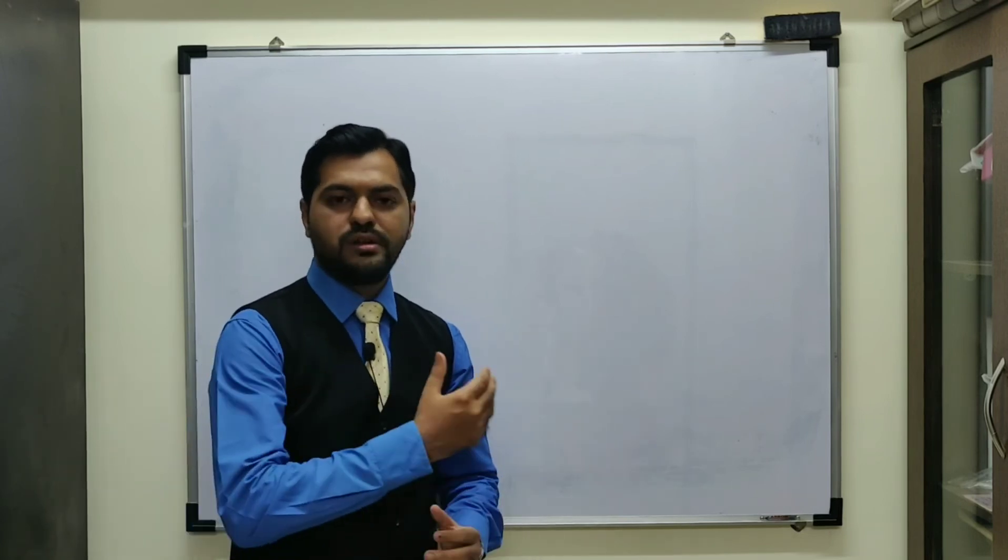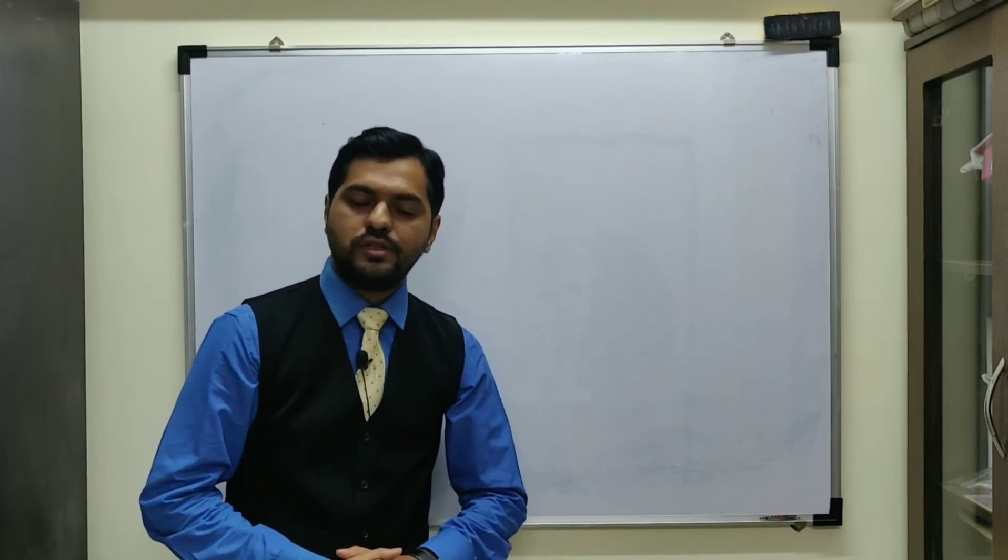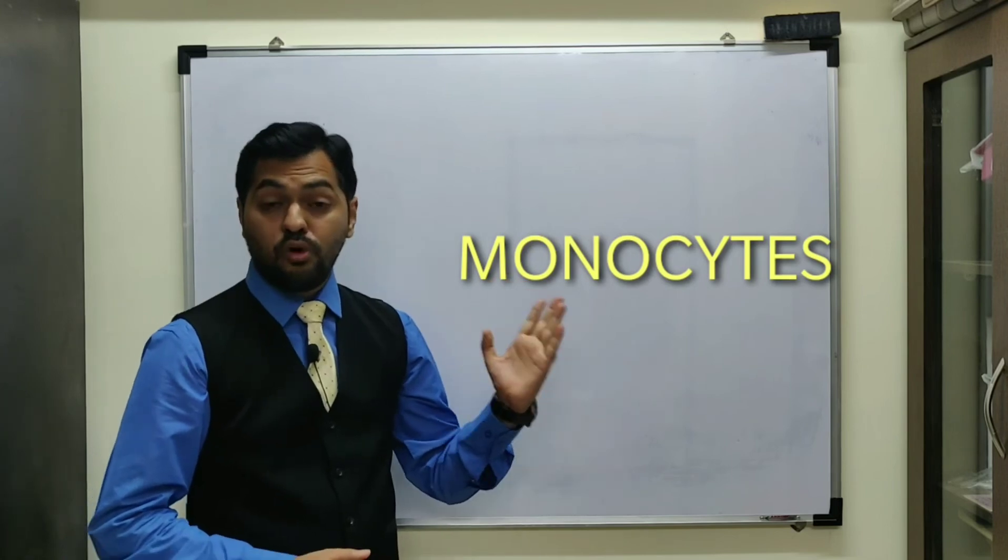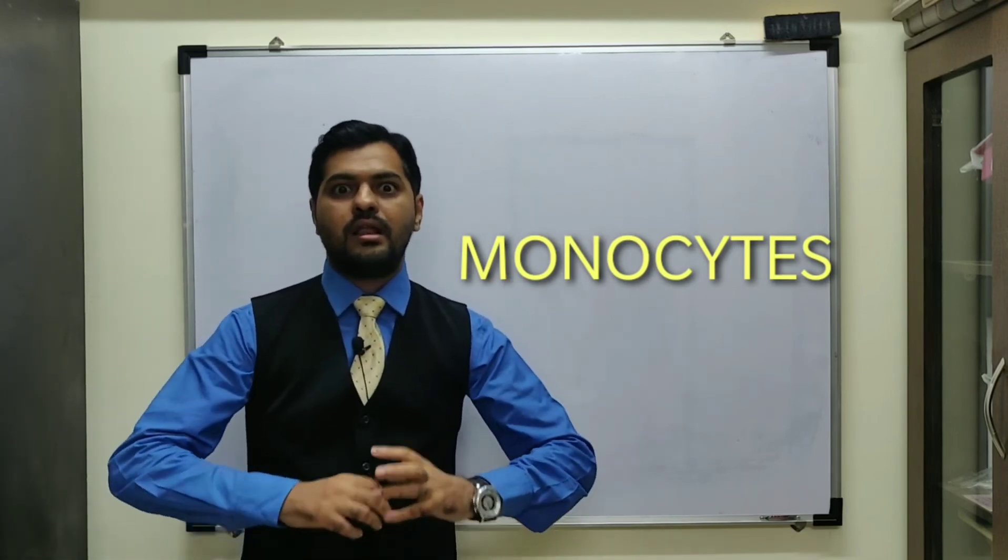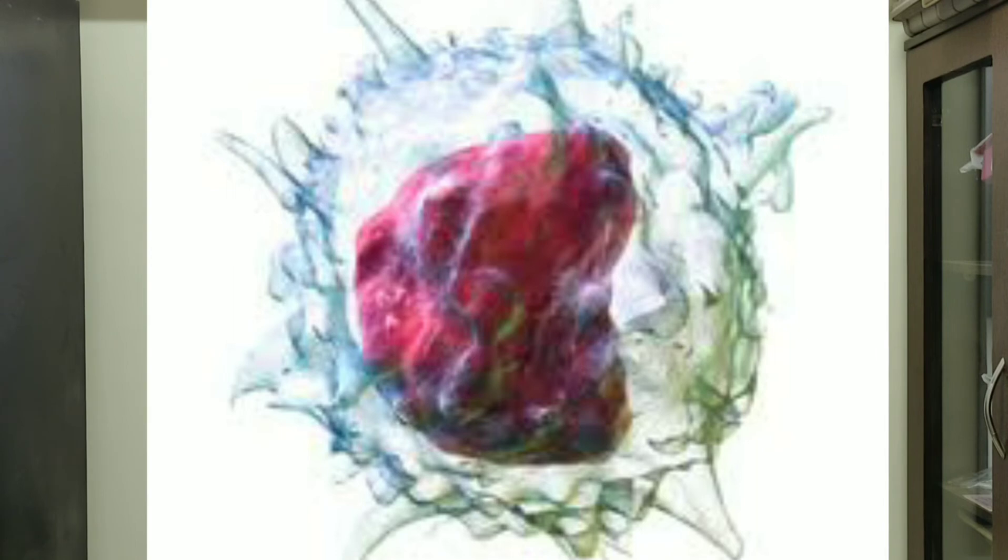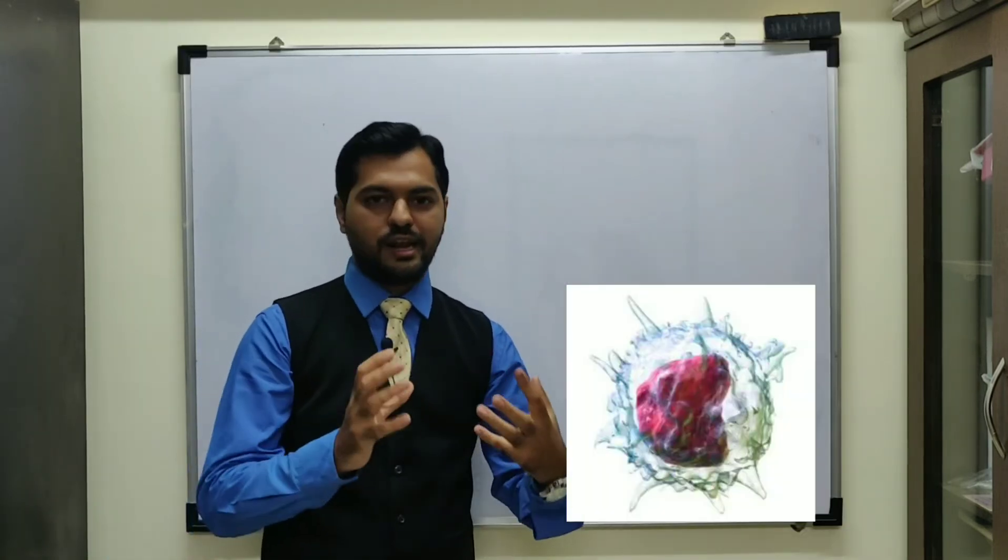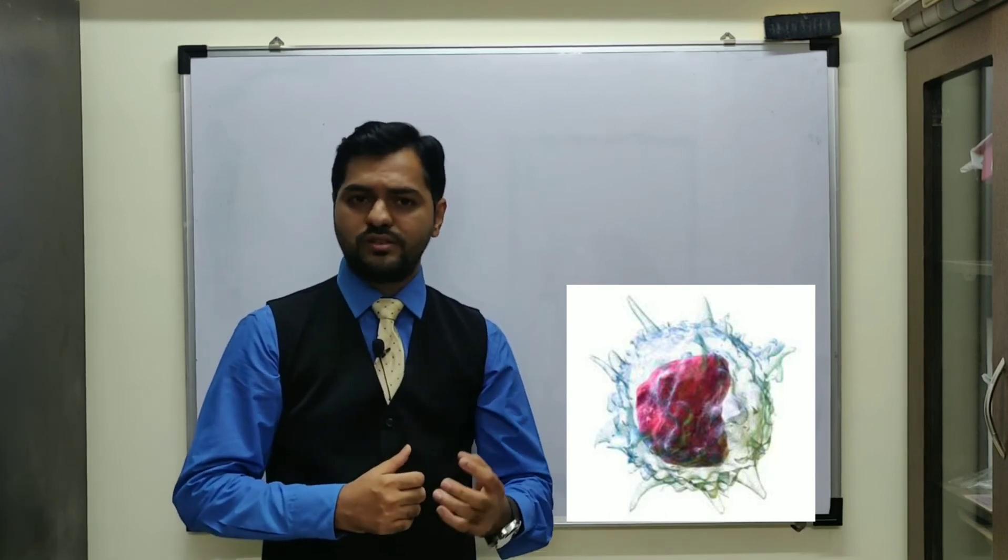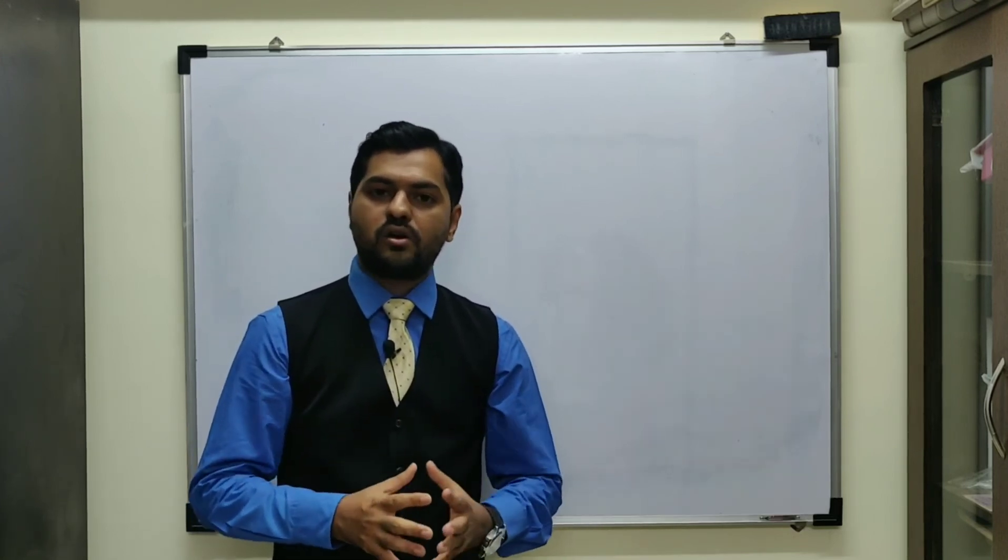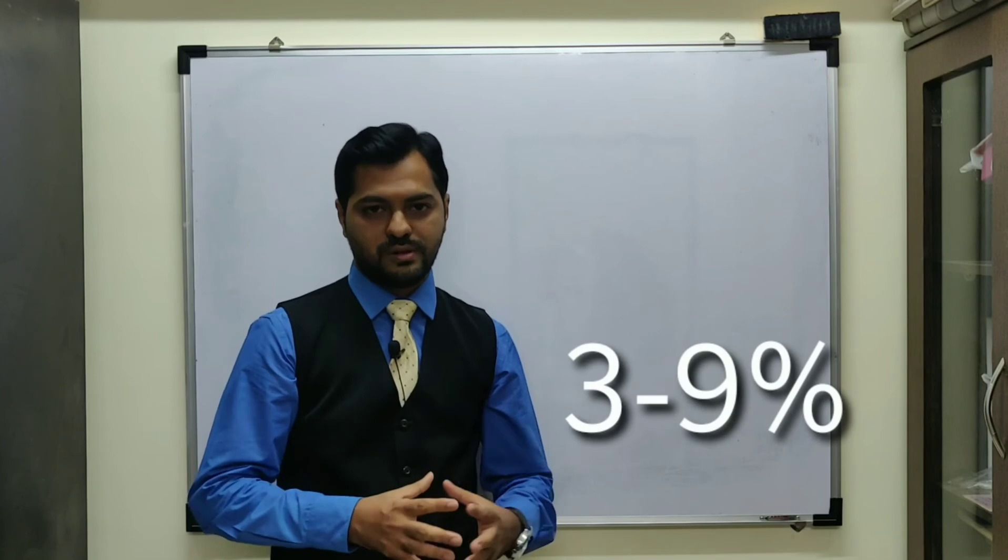Moving to the next agranulocyte, the monocytes. Monocytes are the largest of all the WBCs. Their dimension is around 15 microns. The nucleus is kidney-shaped, also known as reniform nucleus. These are also agranulocytes. Their concentration is around 3 to 9 percent.